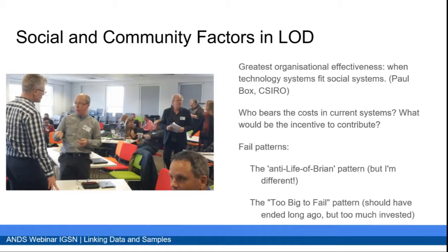There are social and community factors to get things like this working. Paul Box from CSIRO Land and Water said that the greatest organizational effectiveness is achieved when technology systems fit social systems. So it's not that you build it and they will come — it has to support the processes that already exist. Certainly the question is who bears the cost and what would be the incentive to contribute. We've been building things in this domain for a while, and it was useful to discuss the fail patterns. We identified two major fail patterns: the 'Anti-Life of Brian' pattern — 'I am different, so I have to do things differently' — and the 'too-big-to-fail' pattern, where something should have ended long ago but we've invested too many resources and everybody is embarrassed to pull the plug. It would have been better to allow things to fail quickly and start with a fresh view.